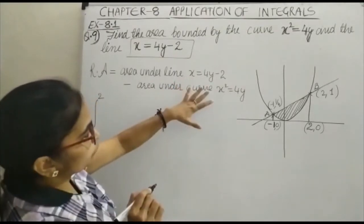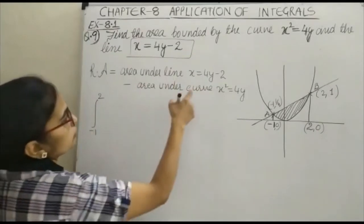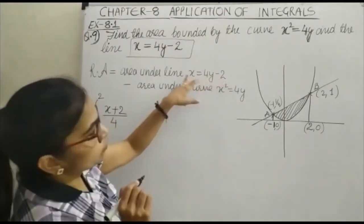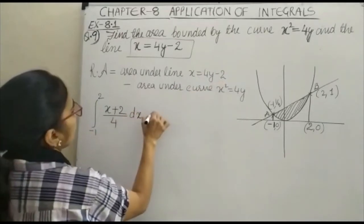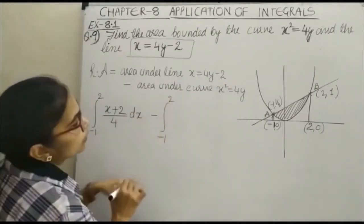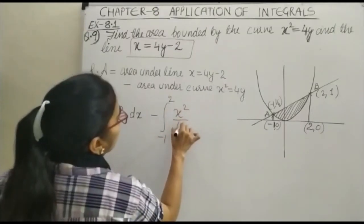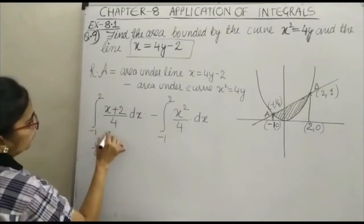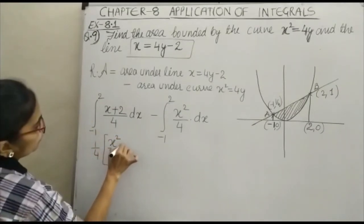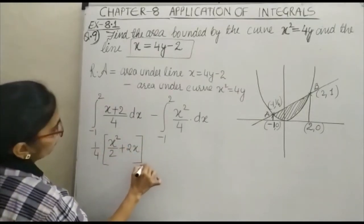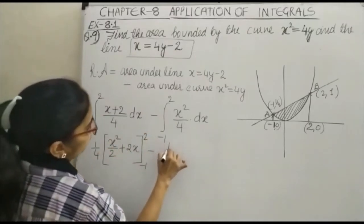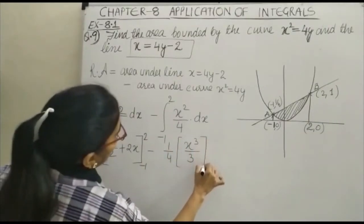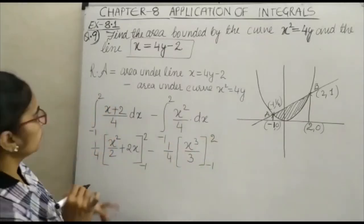Writing y in terms of x for the line: y = (x + 2)/4. So the integral is ∫₋₁² (x + 2)/4 dx minus ∫₋₁² x²/4 dx. Integrating gives us [x²/2 + 2x] from -1 to 2 minus (1/4)[x³/3] from -1 to 2.